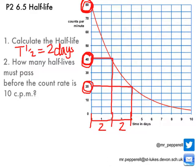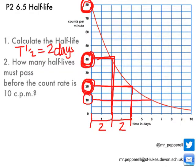The second part says: how many half-lives must pass before the count rate is down to 10 counts per minute? Well, firstly 80 down to 40 — that was one half-life. Then 40 down to 20 — that was two half-lives. Then 20 down to 10 — that was three half-lives before the count rate got down to 10 counts per minute. So it has taken three half-lives for that count rate to drop.